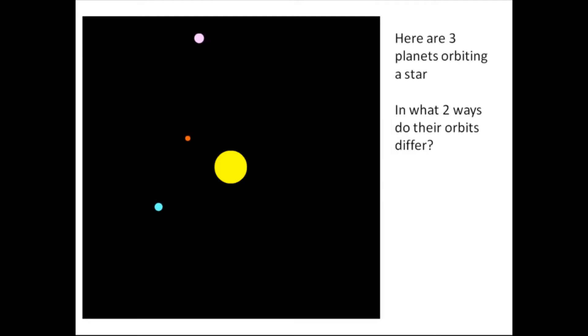Here are three planets orbiting a star. In what two ways do their orbits differ? Well, the first way that their orbits differ, which should be obvious, is that they are at different distances. So the radius of the orbit is different. And something else which I hope is obvious is that they are traveling at different speeds.